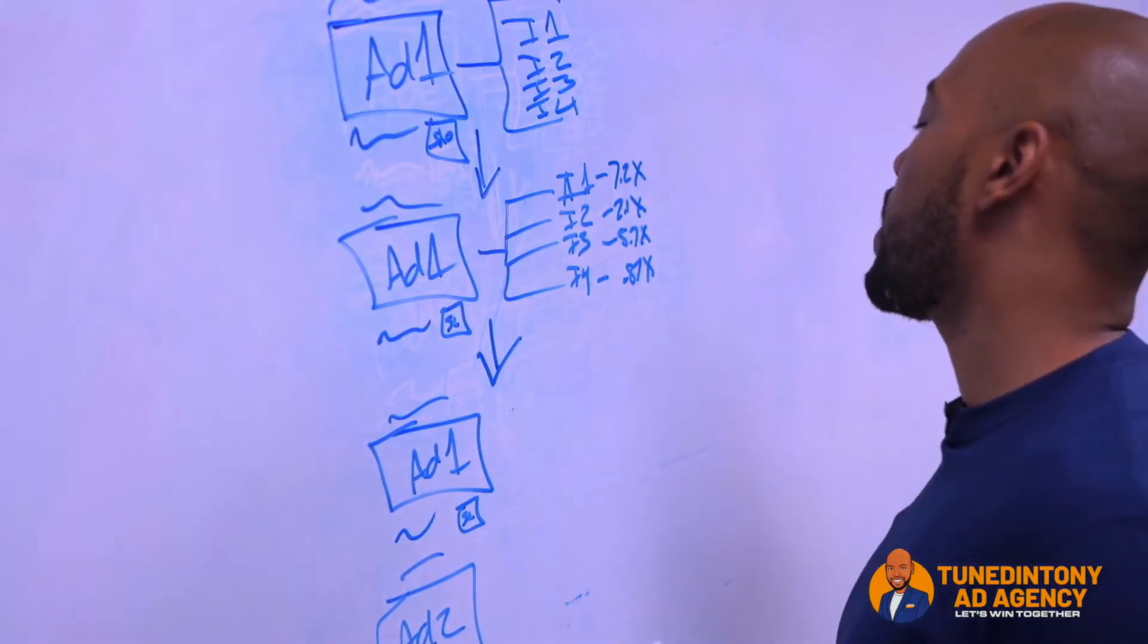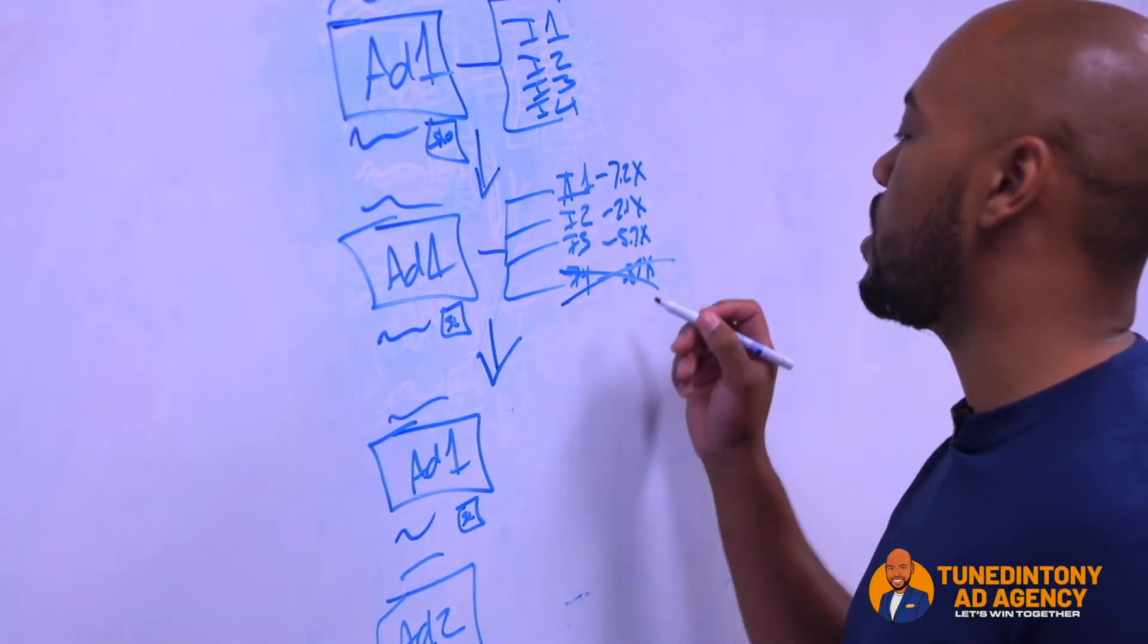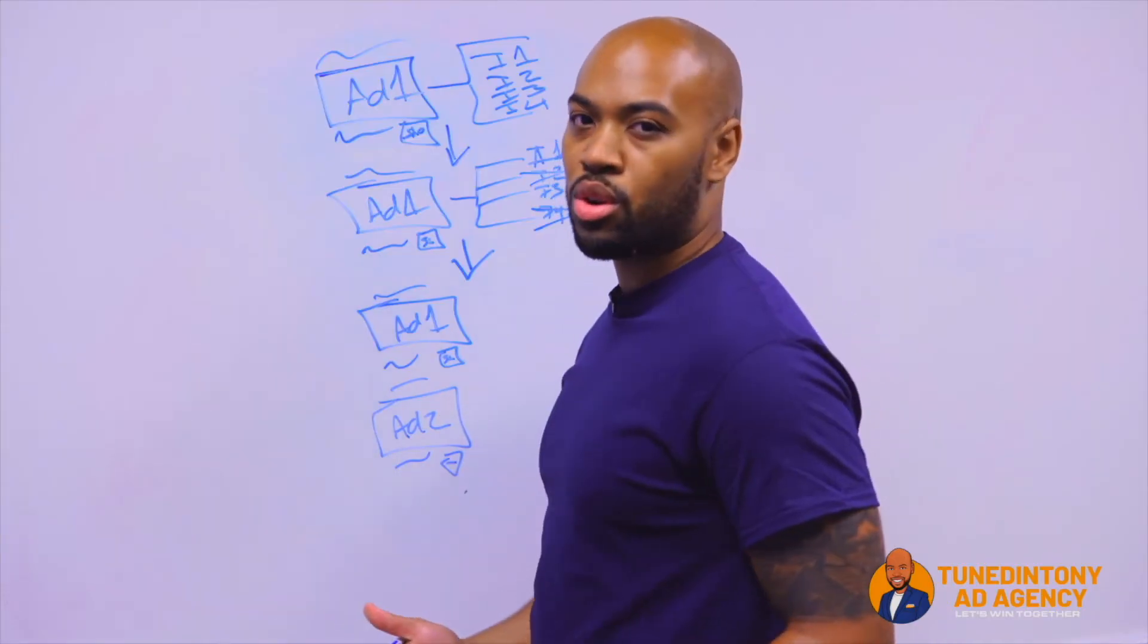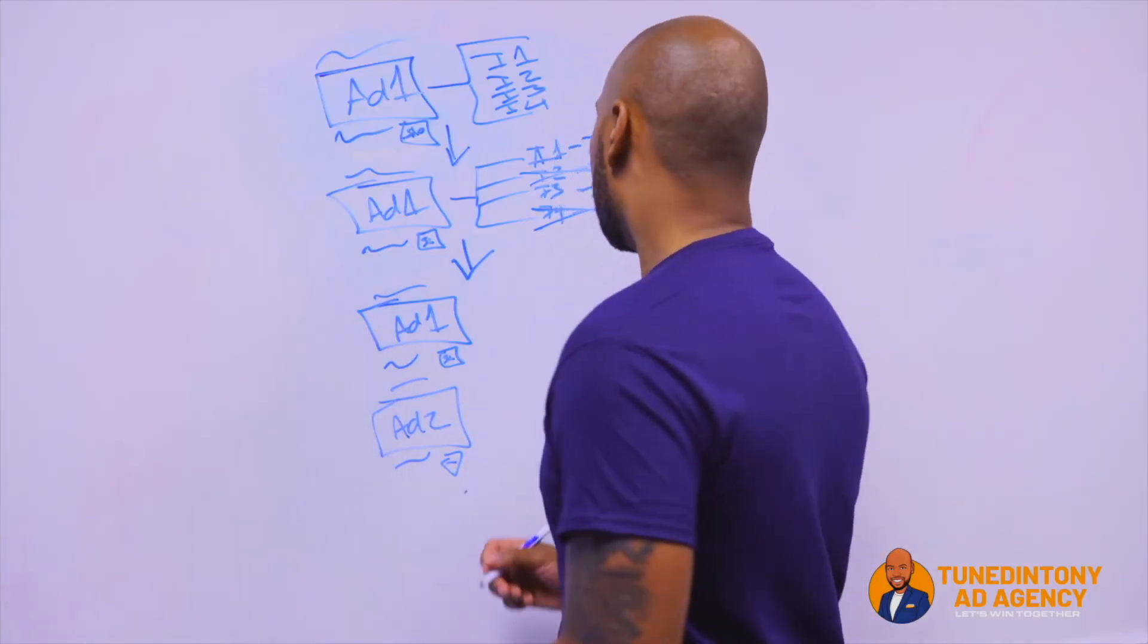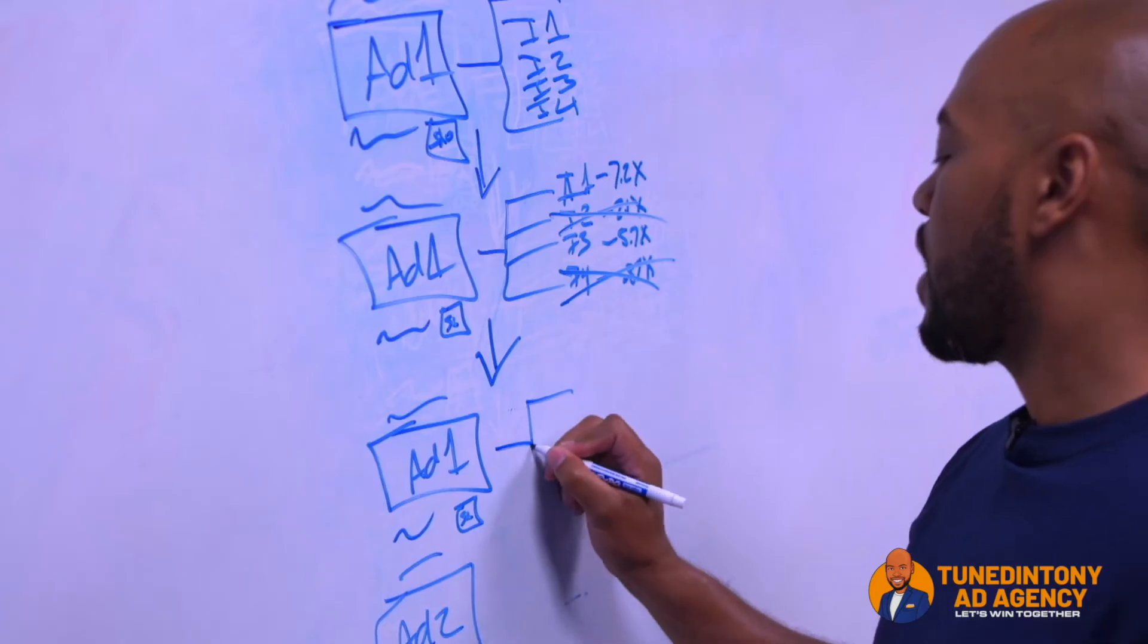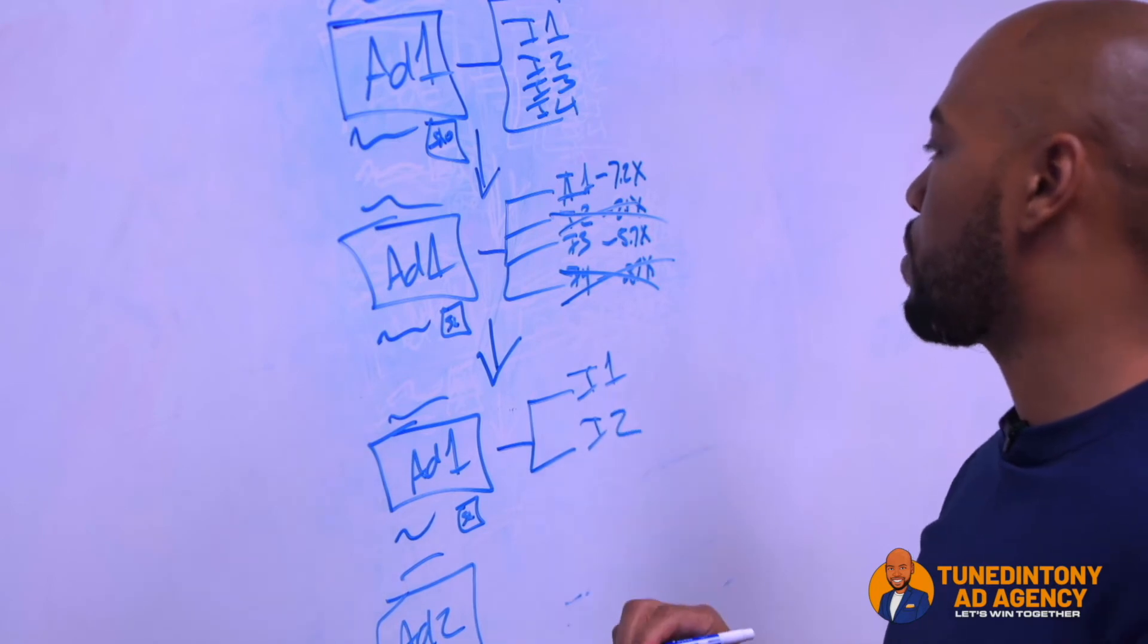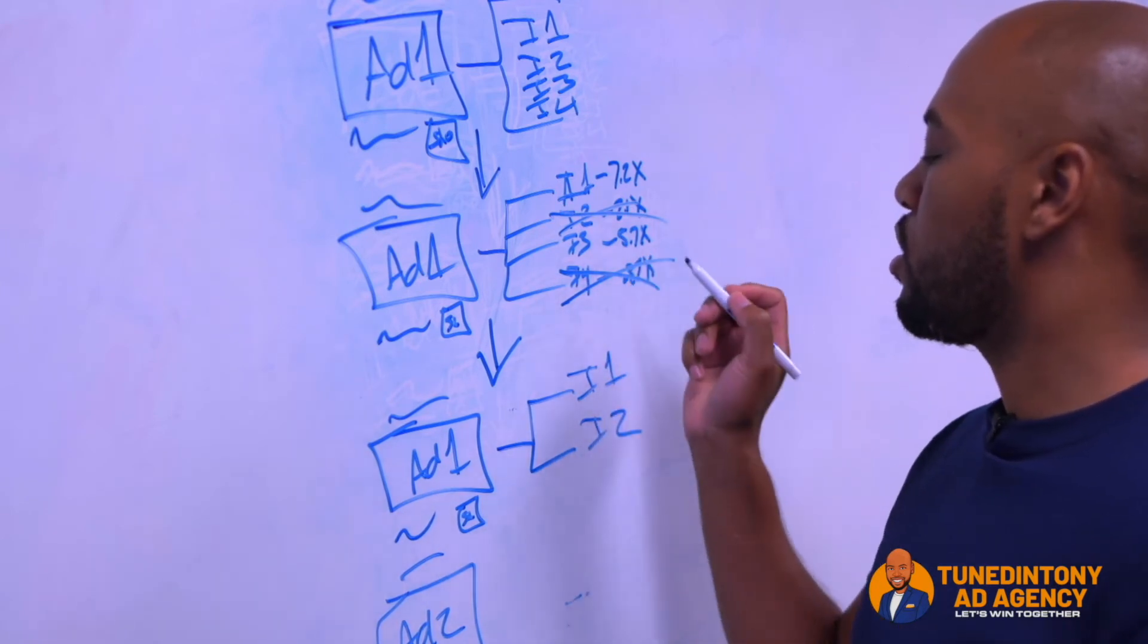So from finding that information out, I can go ahead and cancel out interest four and interest two because they don't meet the 3x ROAS threshold that we put. Now what I'm going to do is I'm going to test ad one again just with the winning interests of one and three that performed at a 7.2 and 5.7.